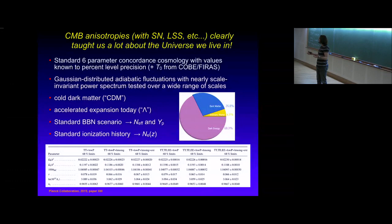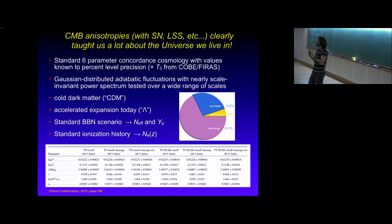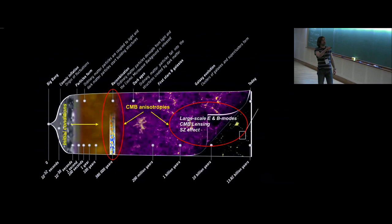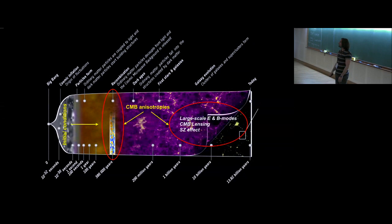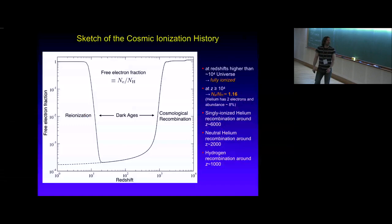We believe that things started with adiabatic fluctuations, possibly set up by inflation. We have cold dark matter, lambda for the accelerated expansion at late times, a BBN scenario, and also a recombination scenario, which defines how we can calculate the CMB anisotropies. The inflation era creates initial conditions, and during last scattering at the recombination era, those anisotropies become visible to us, and we can learn about the cosmology.